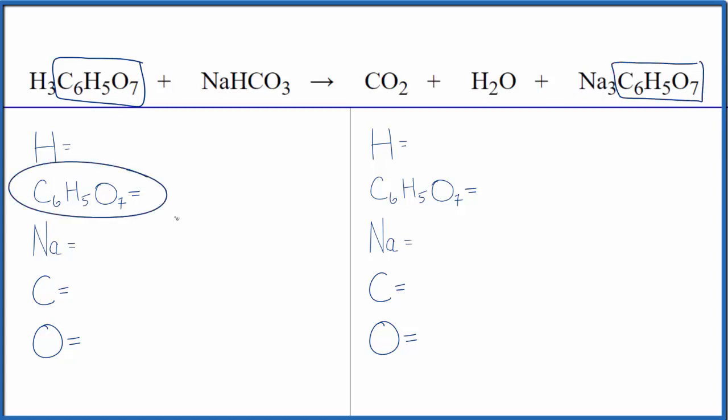So we have three hydrogens, plus we have the one hydrogen here, that gives us four. We're going to ignore these because they're in the citrate ion. Just have one of these citrate ions, one sodium, one carbon, and then three oxygens.